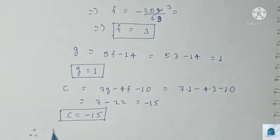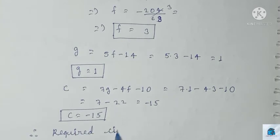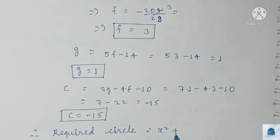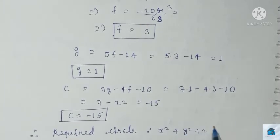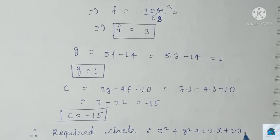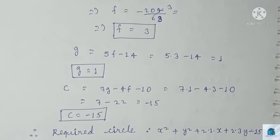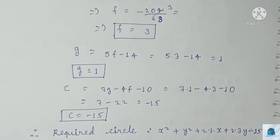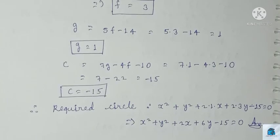Therefore the required circle is x² + y² + 2(1)x + 2(3)y + (-15) = 0, which gives x² + y² + 2x + 6y - 15 = 0. This is our answer. Please like, share, and subscribe.